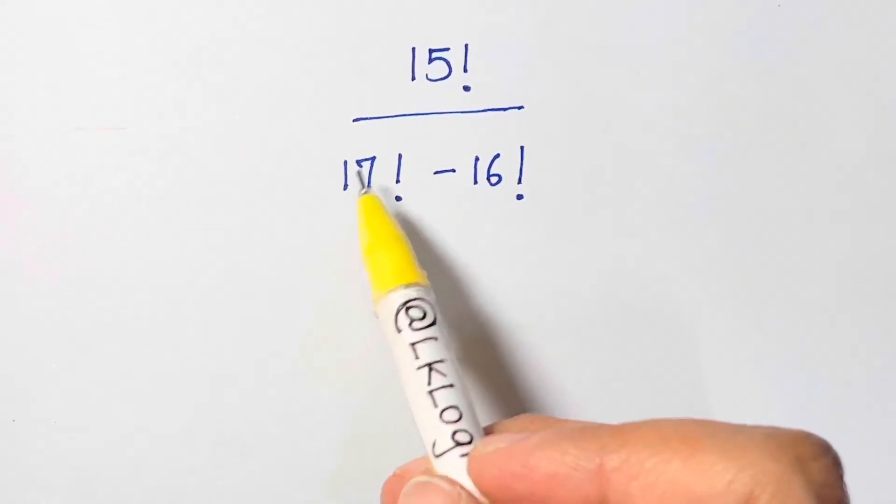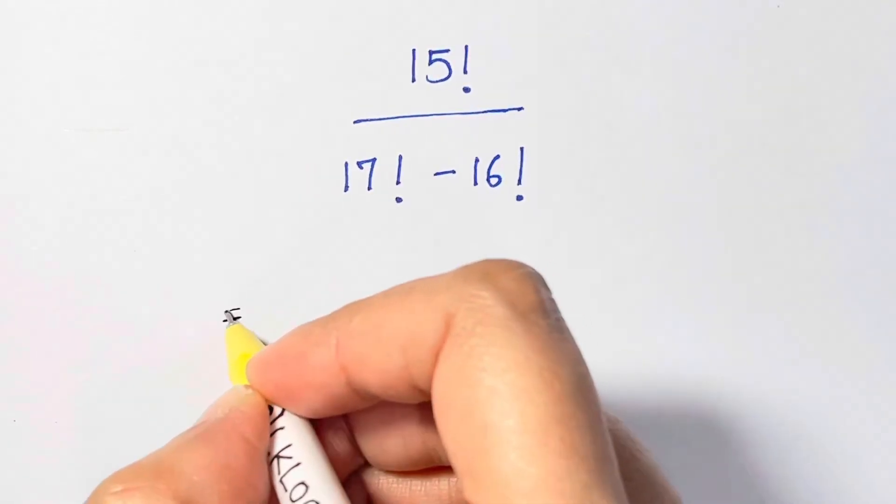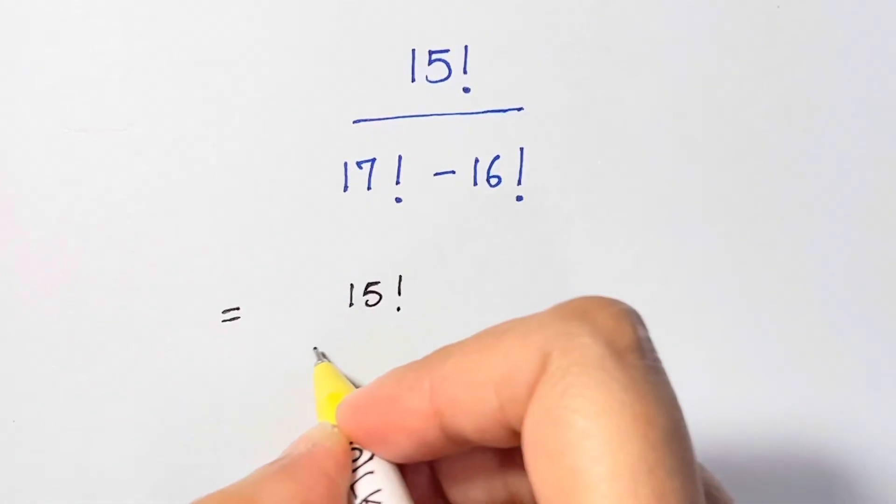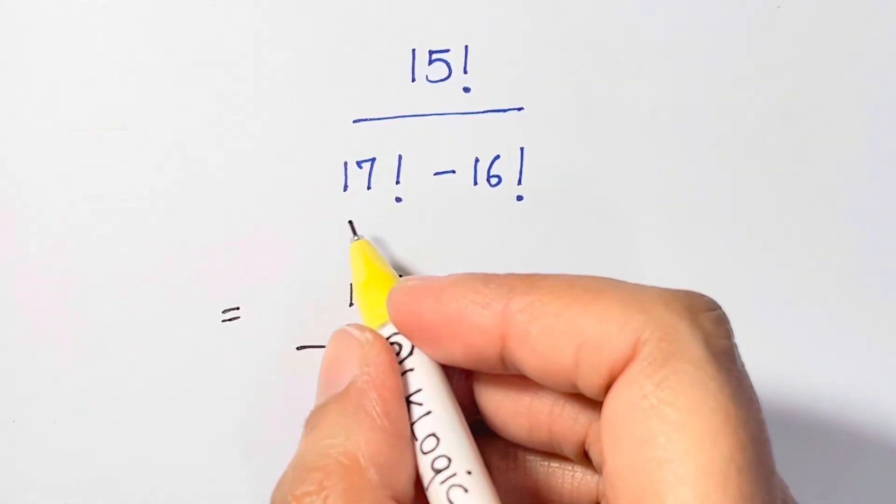Hi everyone, I have a very nice factorial problem for you all. Let's solve this: 15 factorial divided by (17 factorial minus 16 factorial). Now what I'm going to do is split 17 factorial.